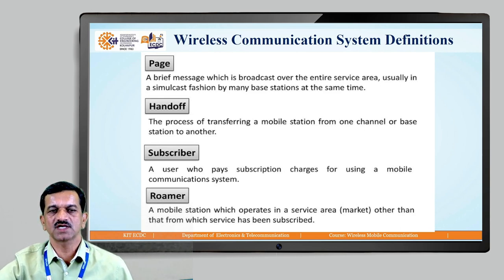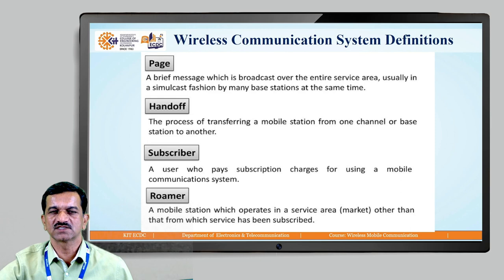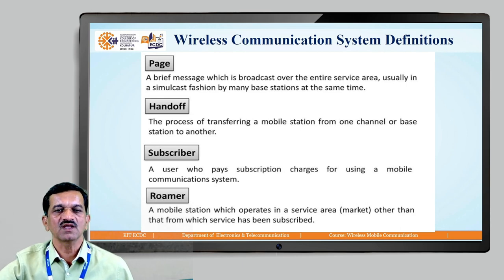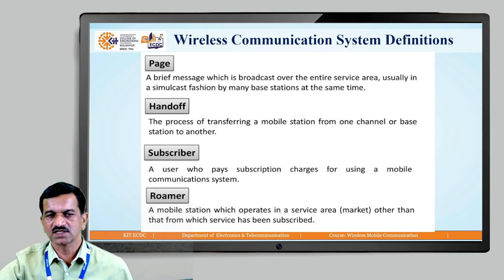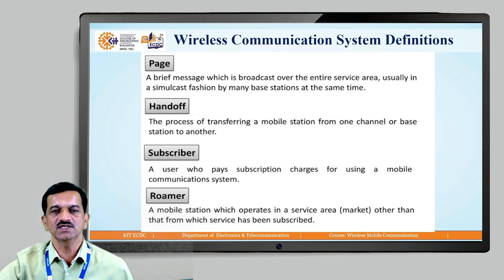Roamer: subscribers and roamers are different. A roamer is a mobile station which operates in a service area other than the one in which the service has been subscribed. Different areas have different service providers working in them, and if you cross over from one particular area to another, that mobile station is known as a roamer.